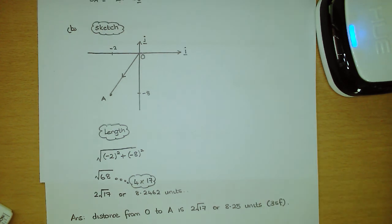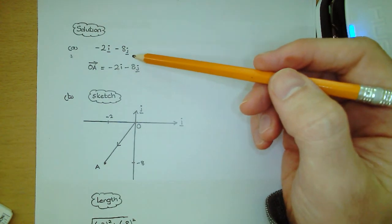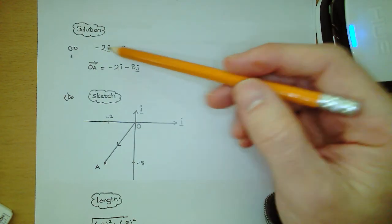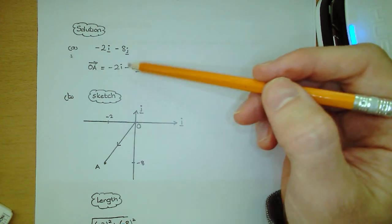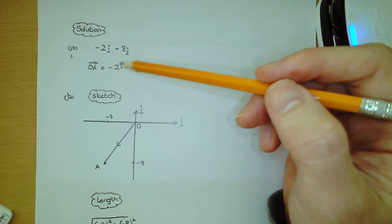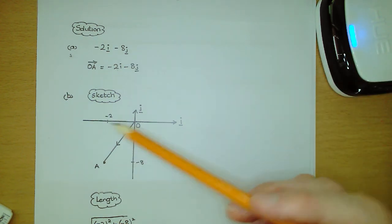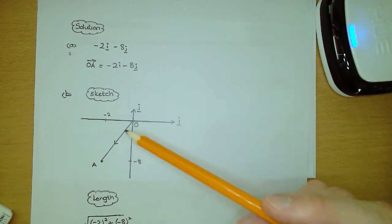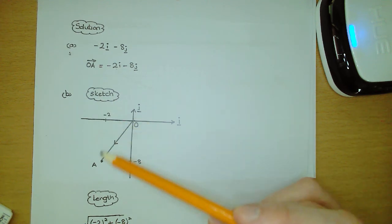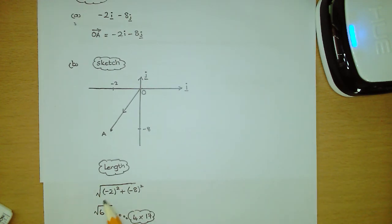So all we're really doing in that example is, in part A, just writing down what the position vector is in component form — you get that directly from the coordinates of A and write it down in component form. Then when you're asked to find the distance that point A is from the origin, it's a good idea to draw a sketch, put the position vector in, and then all you're doing is finding the length of the position vector using the formula: the square root of the i component squared plus the j component squared.